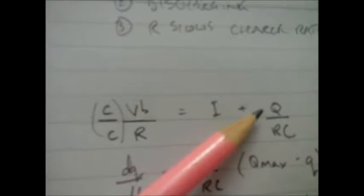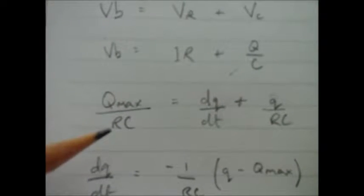This charge here will be the instantaneous charge of the capacitor, depending on how long it's been charging for. So I can rewrite my equation like this. I've got Q max divided by RC.